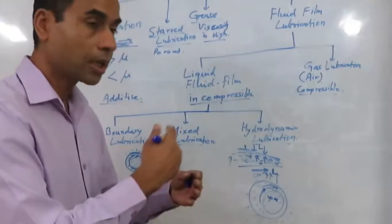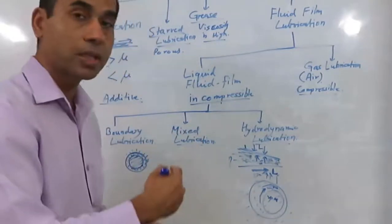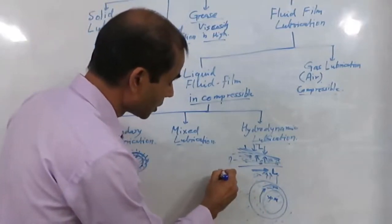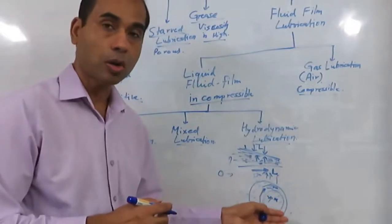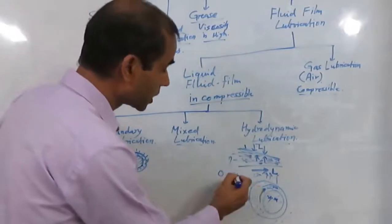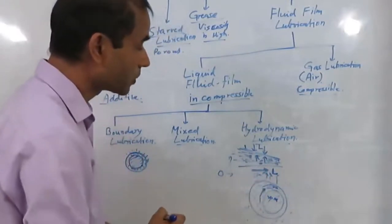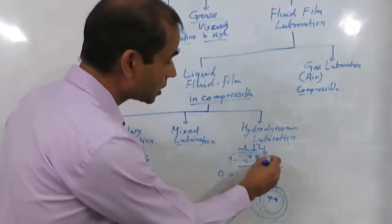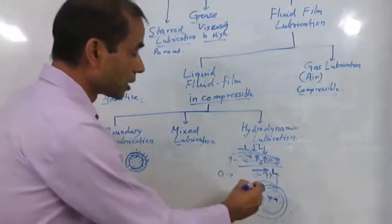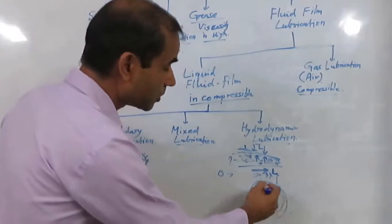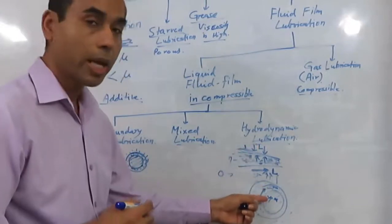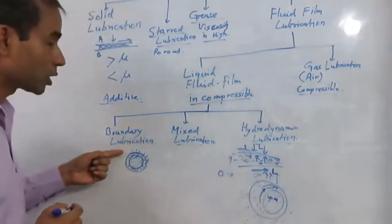However, hydrodynamic lubrication doesn't happen all the time in a bearing because it depends upon relative velocity. When the bearing starts, the relative velocity starts from zero. Similarly, when the bearing stops, it goes from very high RPM back to zero. At those points the relative velocity is zero, so there will be moments when the two surfaces actually meet with each other during sliding, and wear will take place. That's why we also need boundary lubrication.